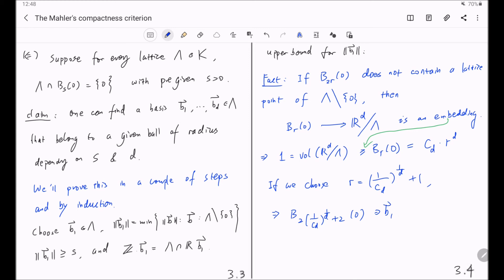So you have found a constant that only depends on d, also independent of lambda, such that b_1 is in this ball. In that way, we give an upper bound for the norm of b_1 that only depends on d.